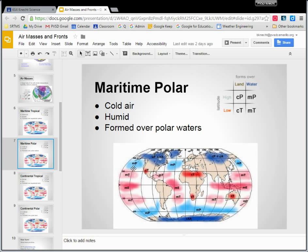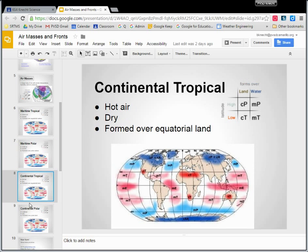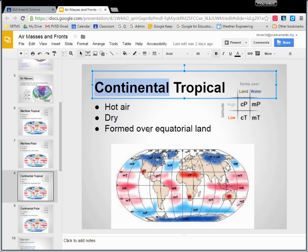The ones that form over the land have, instead of having maritime, they have continental in their name. So as you can predict, continental tropical means it forms over land and it's warm.